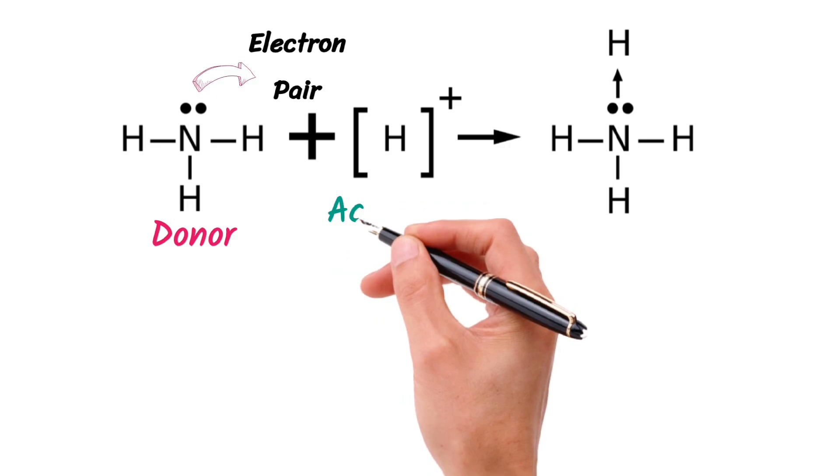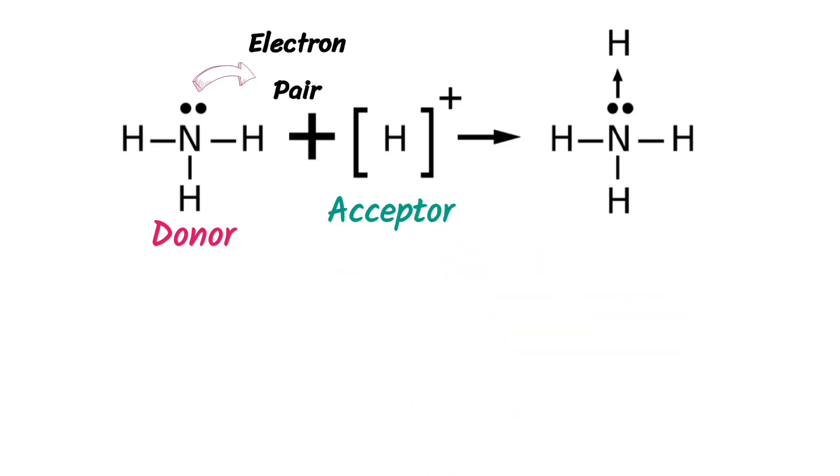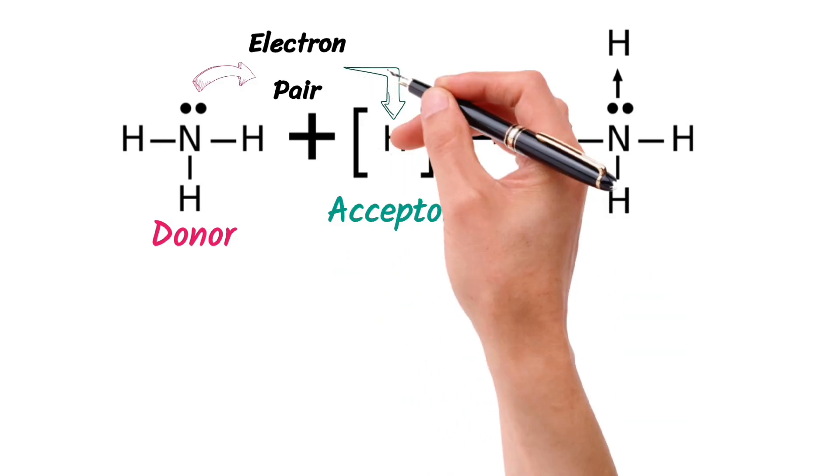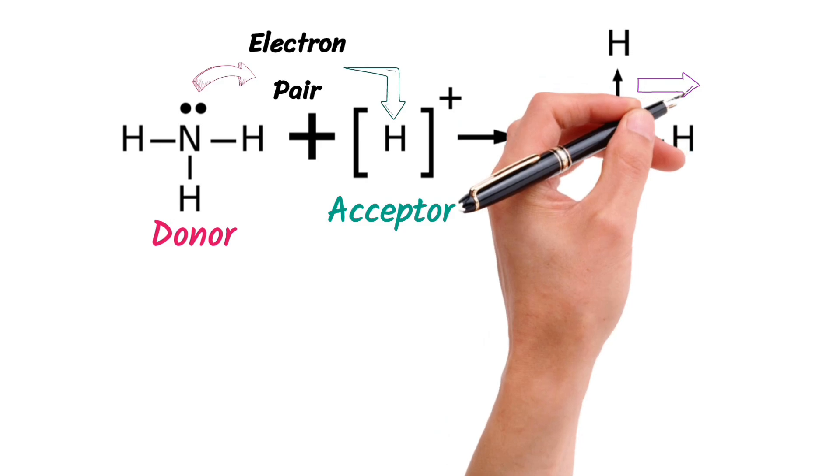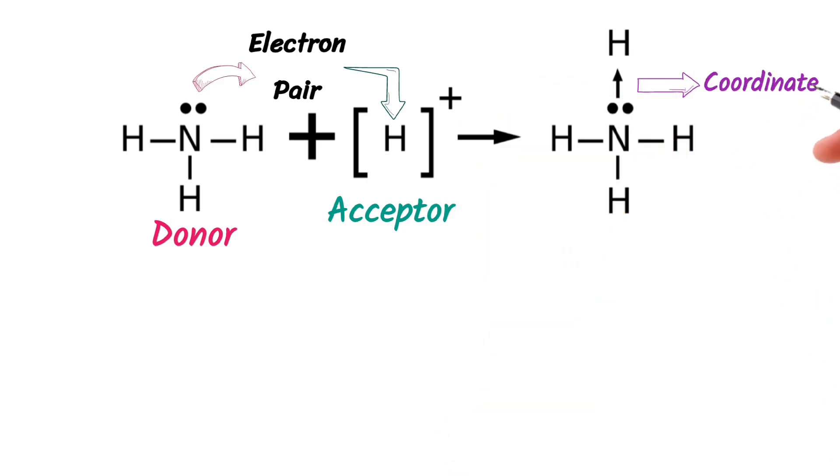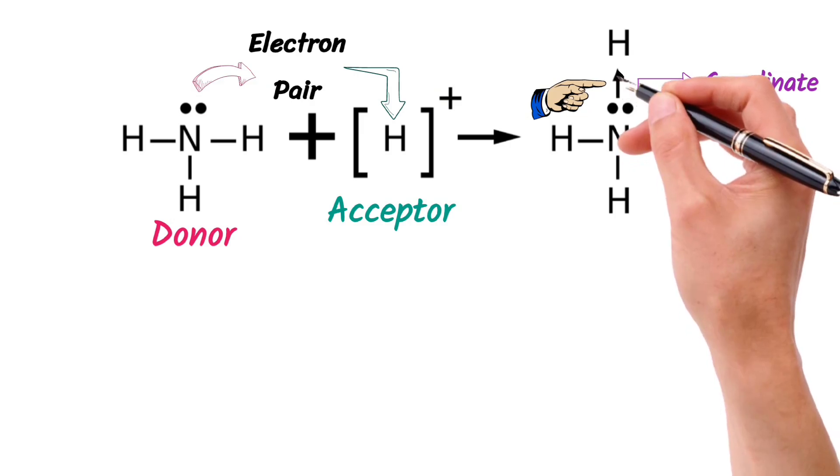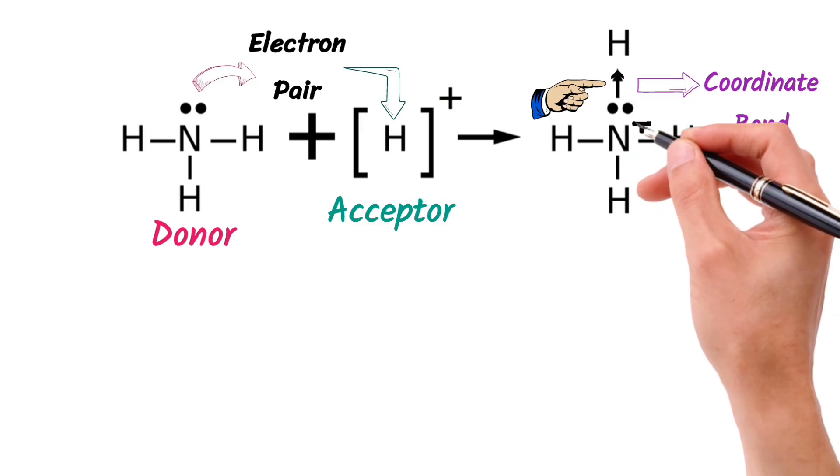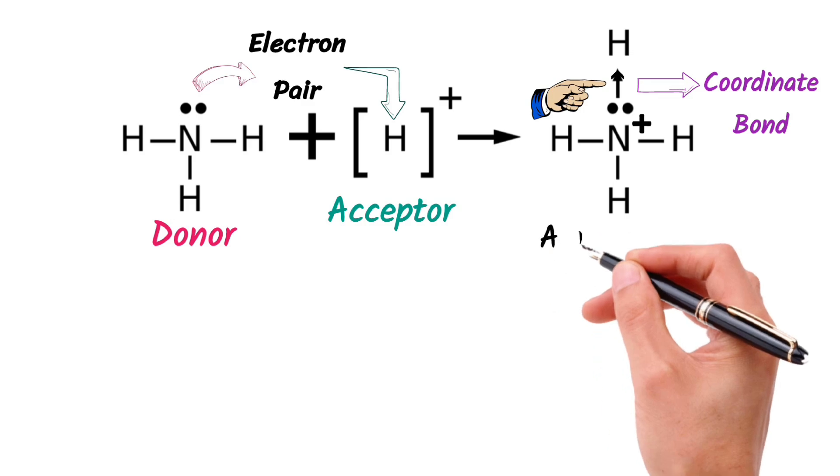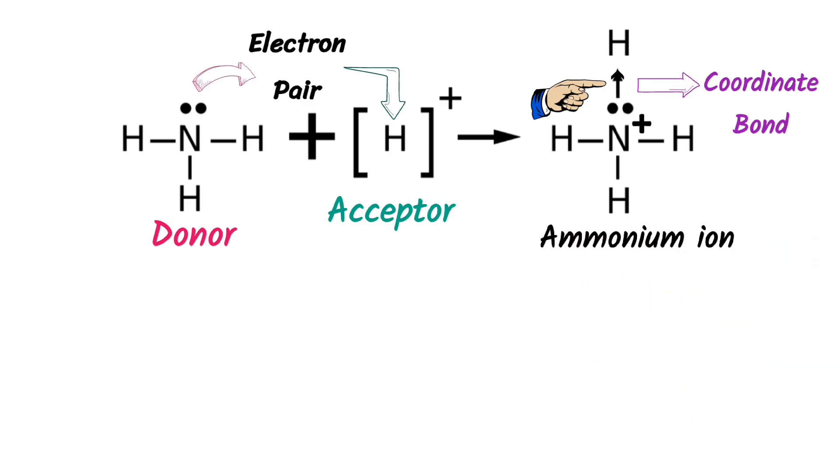On the other hand, the H-positive ion is an acceptor because it accepts the electron pair from nitrogen. This interaction forms a coordinate bond between nitrogen and hydrogen. The bond is represented with an arrow pointing towards acceptor from donor. It results in a positive charge on nitrogen and the compound formed known as ammonium ion.